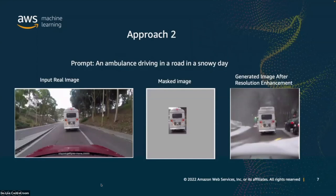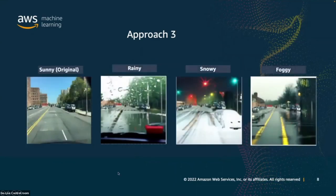The second approach is the inverse: we take an image with a real emergency vehicle, crop that portion out, mask the rest of the image, and ask the diffusion model to provide a different background. Here we can see a real ambulance on the street — we capture the ambulance, mask out the background, generate a new background from the model, then pass it to the super-resolution model. The third approach changes a global feature of the image using the super-resolution model with text prompts, changing the image to rainy, snowy, or foggy conditions.